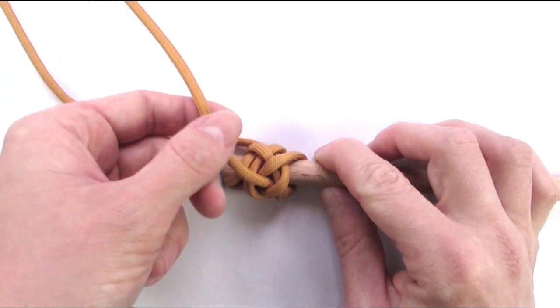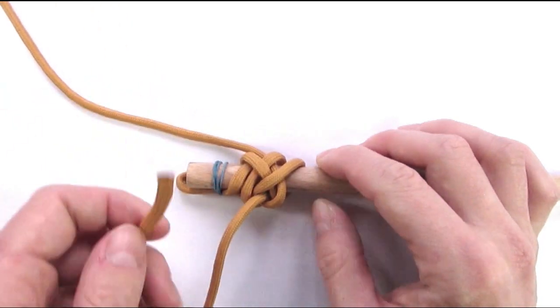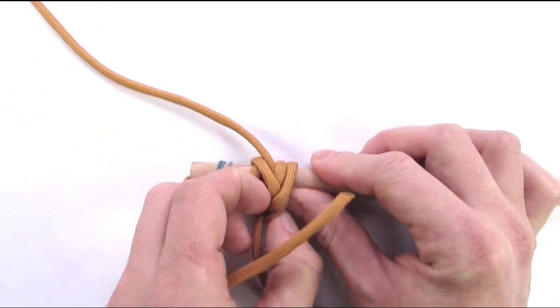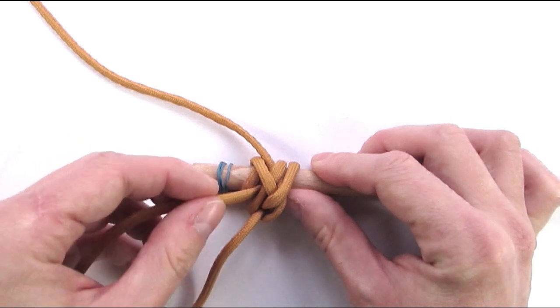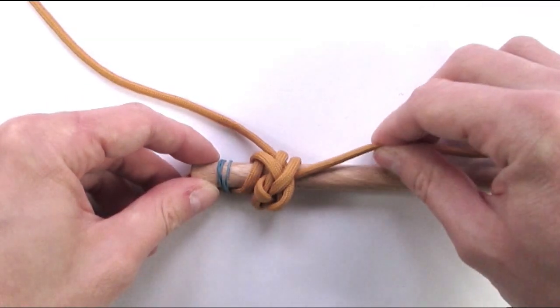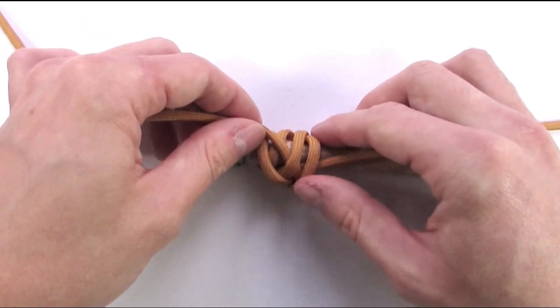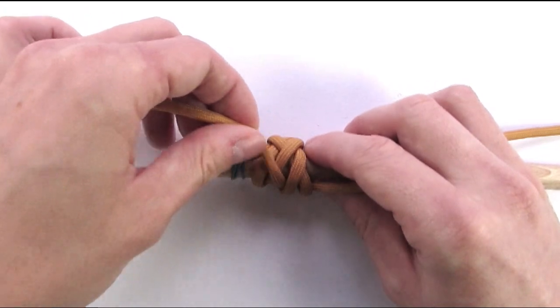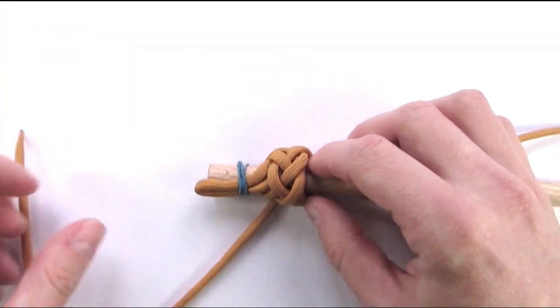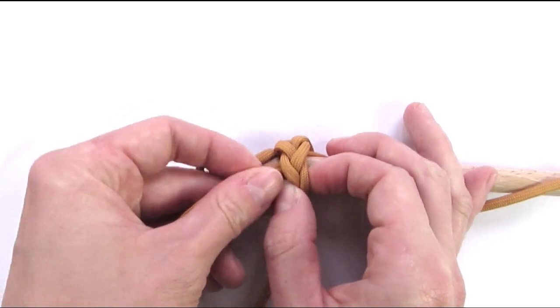Now what we're going to do is take our ends and go under and through the knot towards the right side. Make sure that you exit with an over two and then re-enter the knot going under it and towards the right side.